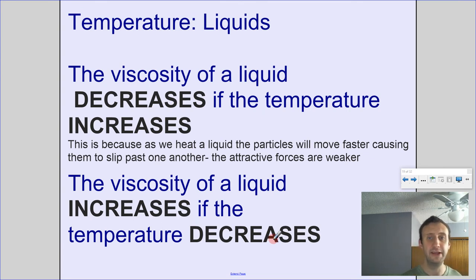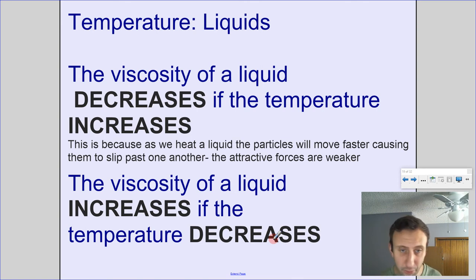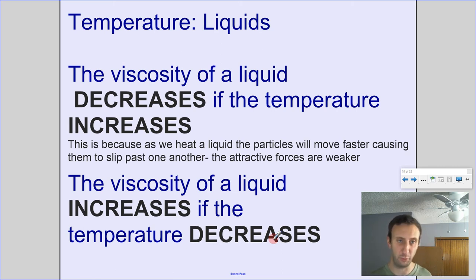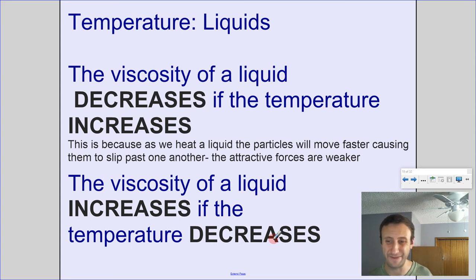Temperature is a factor in liquids. If temperature increases, viscosity of a liquid decreases — it becomes thinner and has a faster flow rate. If temperature decreases, the liquid becomes more viscous, with a lower flow rate. This is because heating a liquid makes particles move faster, causing them to slip past one another more easily, and the attractive forces have less effect.